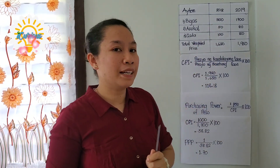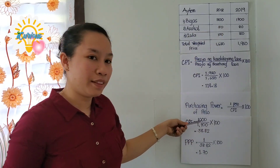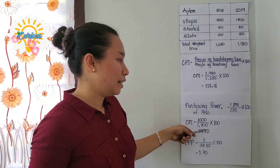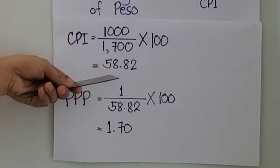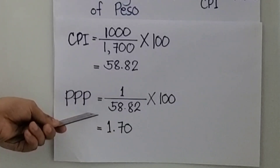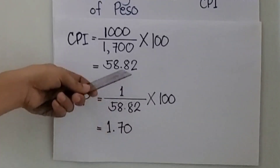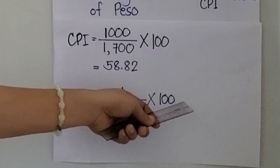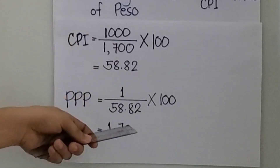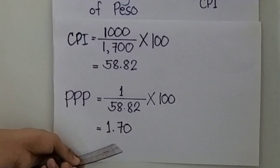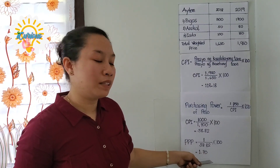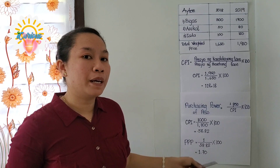Paano kung bumaba ang presyo ng produkto na ating binibili? Halimbawa, kung sakaling ang presyo ng bigas sa taong 2020 ay 1,000 per sack, at sa 2019 ay 1,700 per sack — i-multiply natin ng 100 — ang magiging sagot ay 58.82 ang consumer price index. Kaya i-compute natin ang purchasing power of peso: 1 peso divided by 58.82, times 100. Kasi bumaba ang halaga ng bigas sa taong 2020 kumpara sa 2019, ang magiging purchasing power of peso ay magiging 1 peso and 70 cents. Mas malaki ang purchasing power ng peso sa taong 2020 kumpara sa taong 2019.